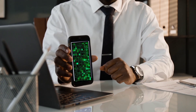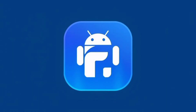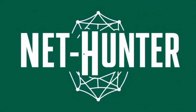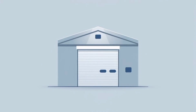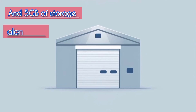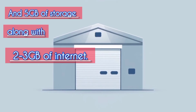Before we begin, you will need: one, F-Droid app; two, Termux; three, NetHunter Key app; four, Hacker Keyboard; and at least five gigabytes of storage along with two to three gigabytes of internet.